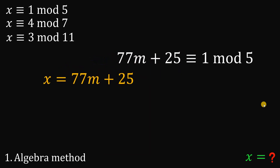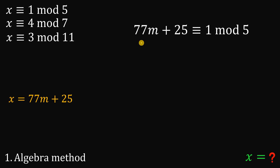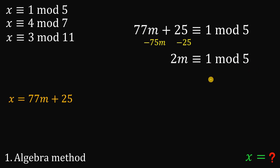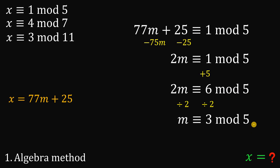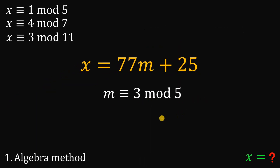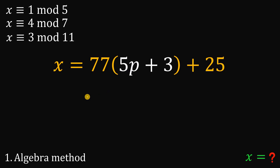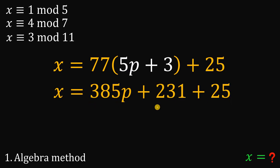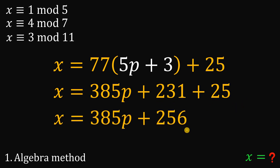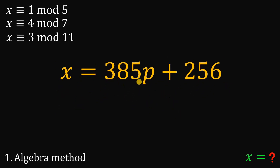Again, let's solve this congruence. Subtract a multiple of 5 on the left-hand side — subtract 75m and 25 — giving us 2m is congruent to 1 mod 5. Add 5 to the remainder, giving 2m is congruent to 6 mod 5. Divide both sides by 2, giving m is congruent to 3 mod 5. Now rewrite this as m equals 5p plus 3, where p is also an integer. Replace m with 5p plus 3. Simplifying: x equals 385p plus 231 plus 25, and 231 plus 25 is 256. So x equals 385p plus 256, where p is an integer.